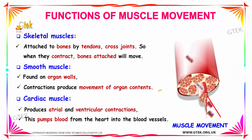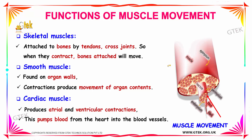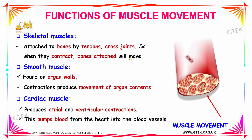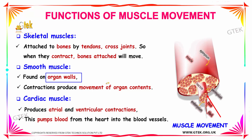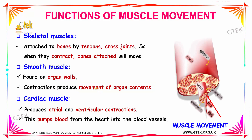Next we are going to see the functions of muscle movement. For skeletal muscles that are attached to bones by tendons and cross joints, when they contract, the bones will move — that is how your skeletal muscles help in movement. Smooth muscles, which are found in your organ walls, produce movement of organ contents by contractions and relaxations, enabling the movement of organ wall contents.